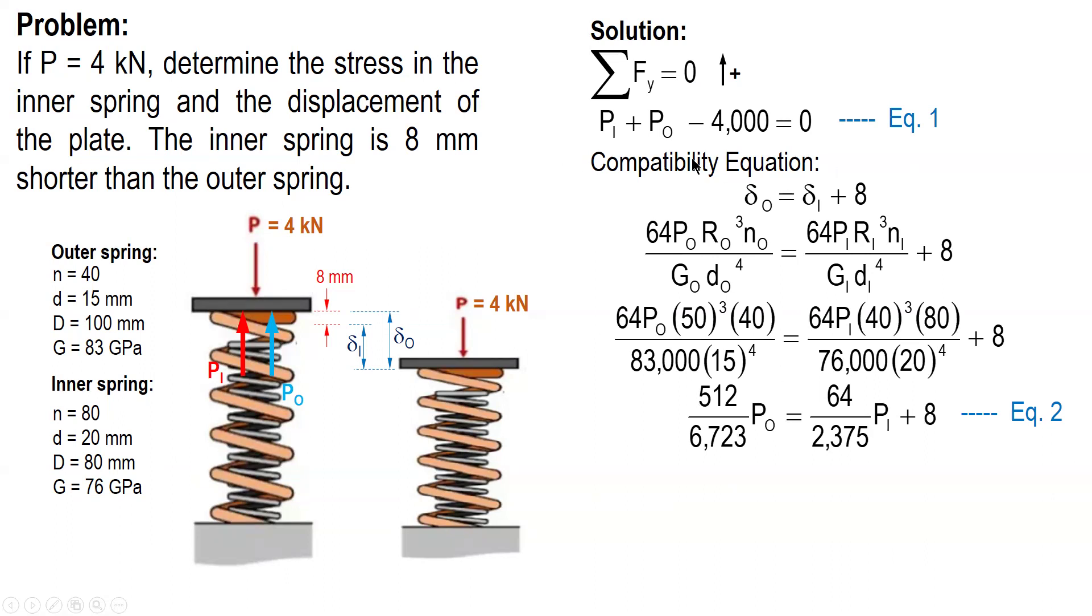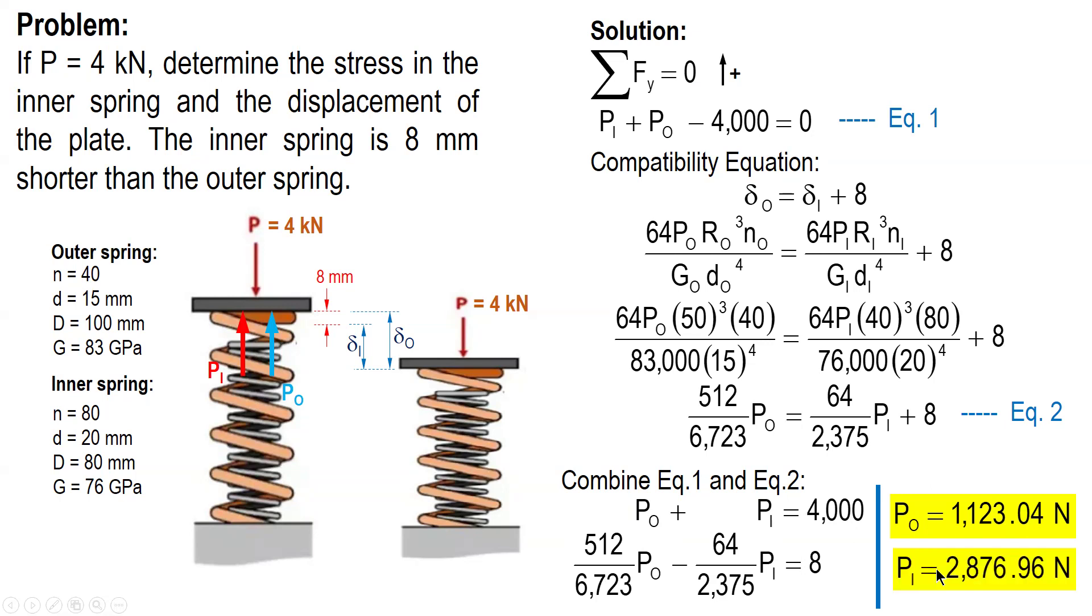And from here, we now have two equations with two unknowns. So, use any method in algebra. So, combine these and rearrange to P O plus P I. Transpose this 4000 to the right side. And then, for equation 2, transpose the P I to the left side. We have this one. Transpose to the left side to make it negative. And use calculator, equation mode, mode 5, mode equation. Two unknowns. And our X value is P O, and our Y value is P I. So, we have P O equal to 1123.04 N, and Y is 2876.96 N.